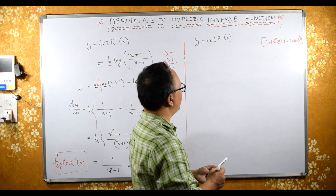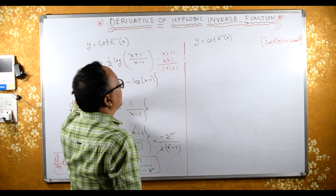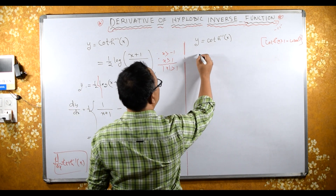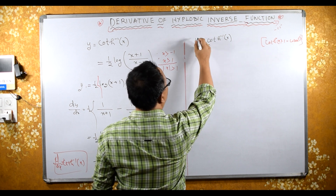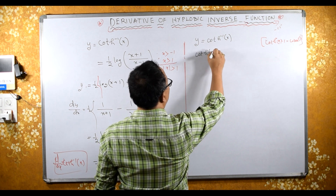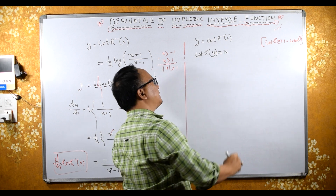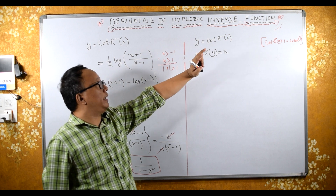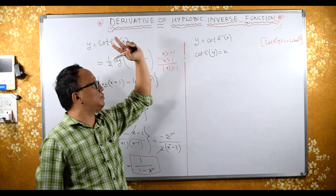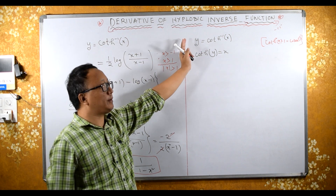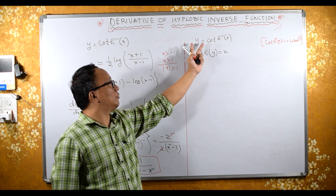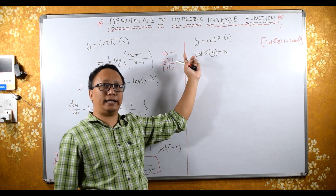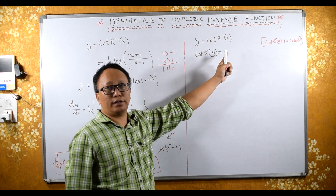Now the second method — let's see. y equals coth hyperbolic inverse x is the same as coth hyperbolic y equals x. Multiplying coth hyperbolic on both sides, coth hyperbolic inverse and coth hyperbolic cancel each other, giving coth(y) equals x.